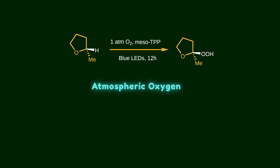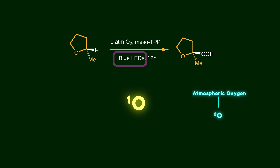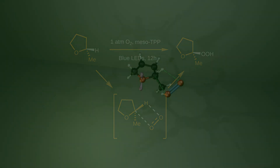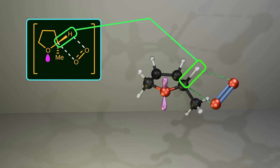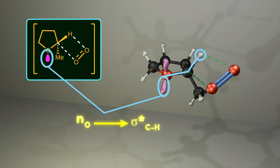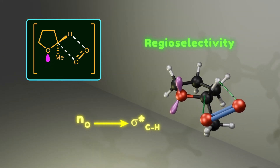Atmospheric oxygen is triplet oxygen, which is relatively unreactive toward carbon-hydrogen bonds. So singlet oxygen is generated under LED light in the presence of a photosensitizer, making it more electrophilic. The anomeric effect plays a key role in the transition state, where the carbon-hydrogen bond is breaking and a new carbon-oxygen bond is forming. The lone pairs of the oxygen atom interact with the anti-bonding orbital of the carbon-hydrogen bond and weaken it, so oxygen can abstract this hydrogen more easily thanks to the neighboring oxygen atom. In other words, the anomeric effect controls the regioselectivity of this reaction.